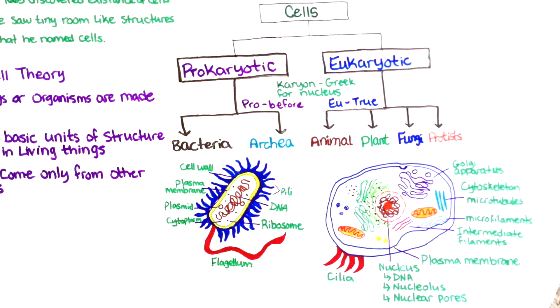Cilia are slender, microscopic, hair-like structures or organelles that extend from the surface of nearly all mammalian cells. Moving cilia are found in the lungs, respiratory tract, and middle ear.